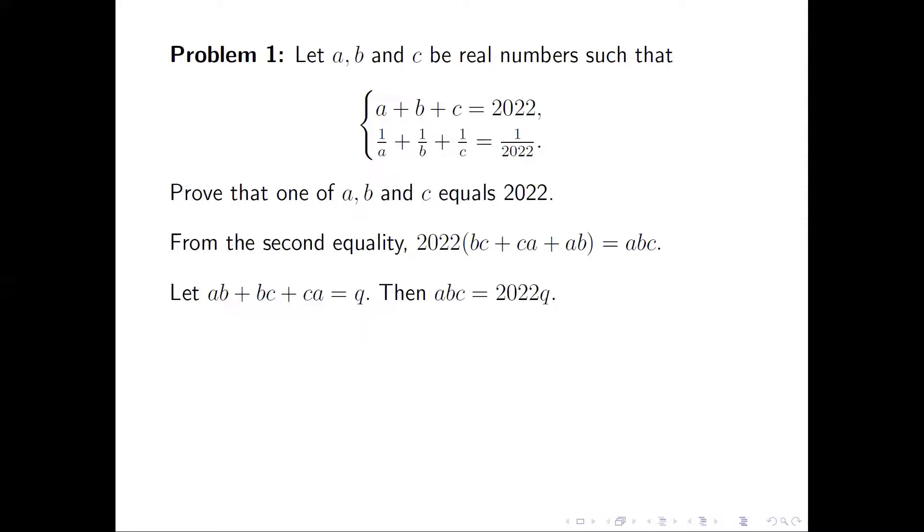Let AB + BC + CA equal Q. Then ABC equals 2022Q.